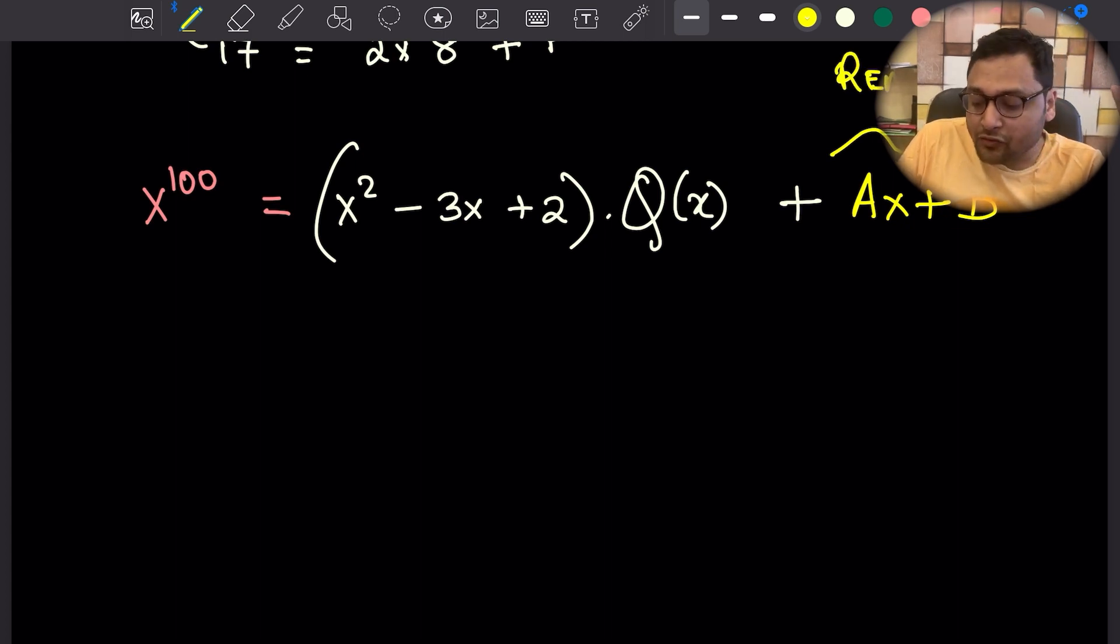If we are able to find a and b, then we will be done. All we need to find is a and b. How do we go about it? This is the trick: you have to factorize this and make this part zero.